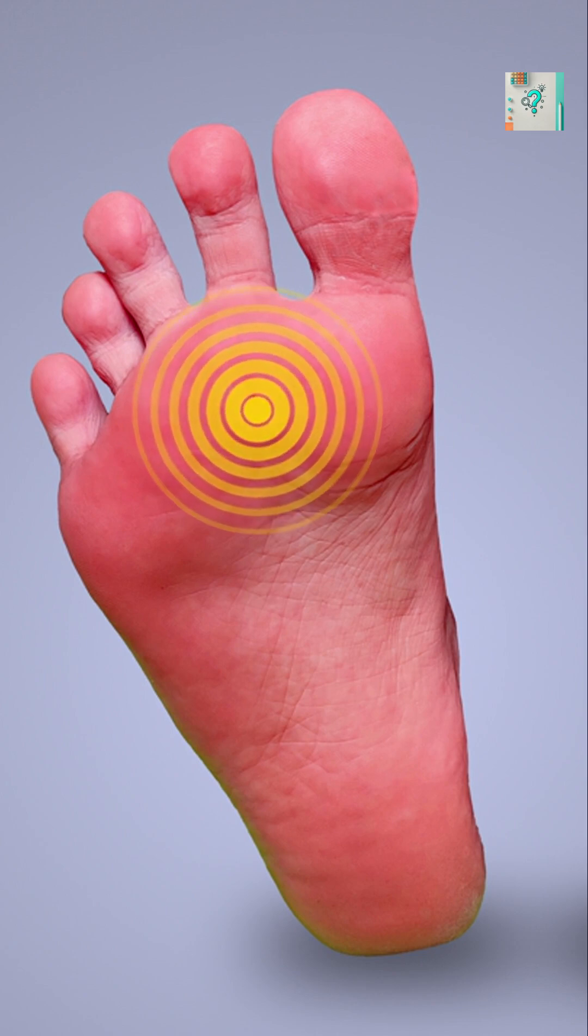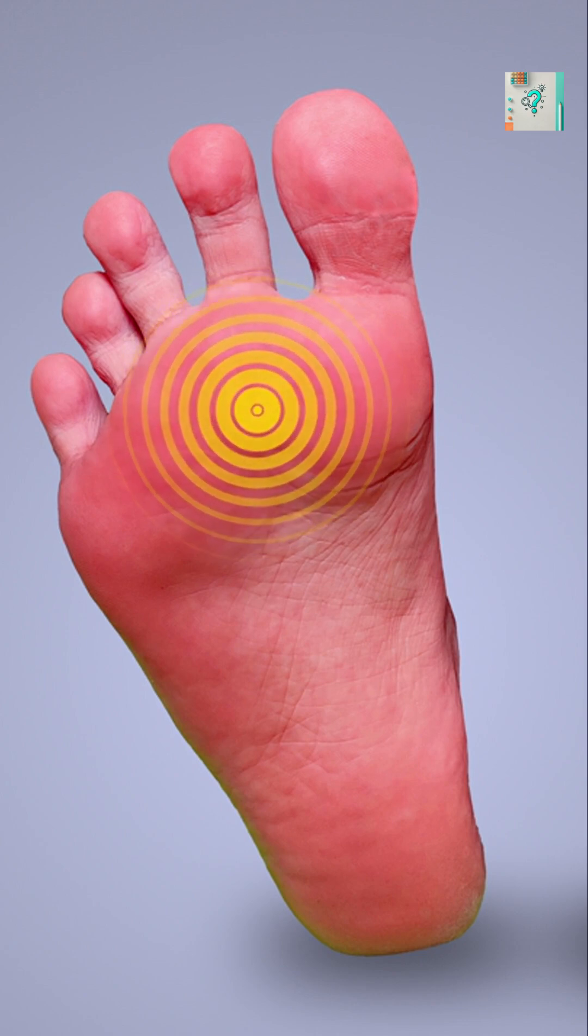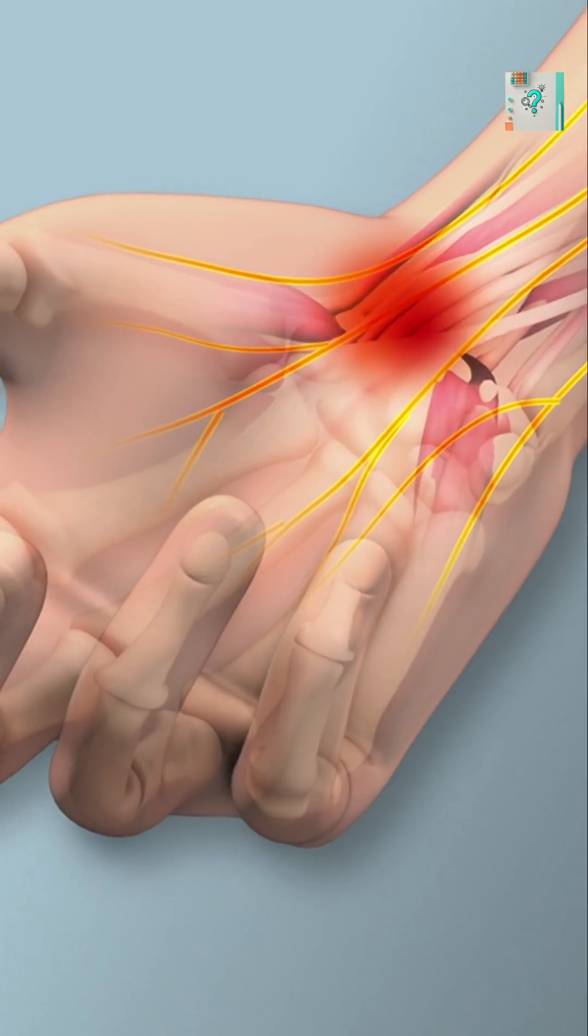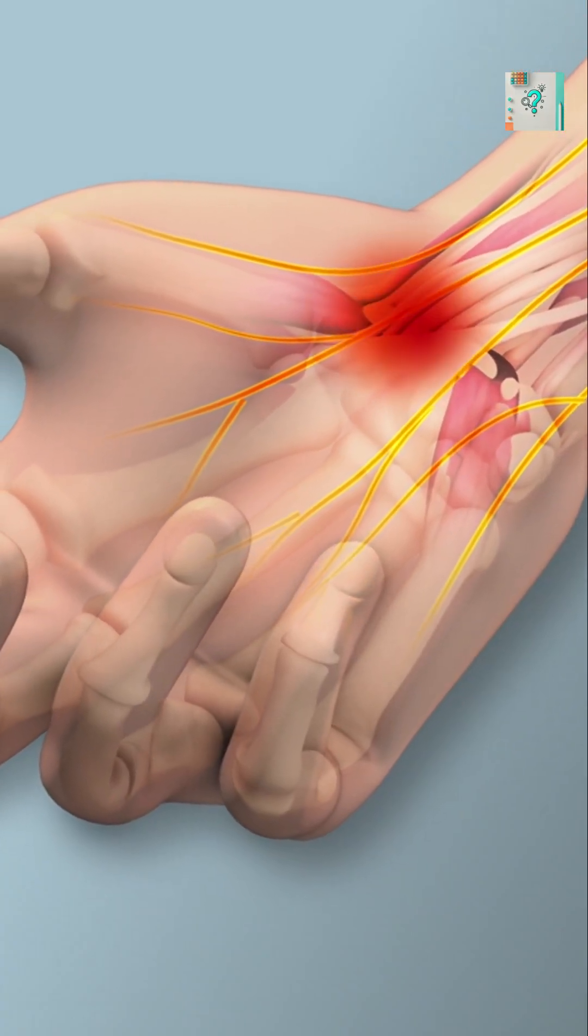When blood flow is restricted, nerves don't get enough oxygen and nutrients. As a result, the signals they send to the brain become scrambled.